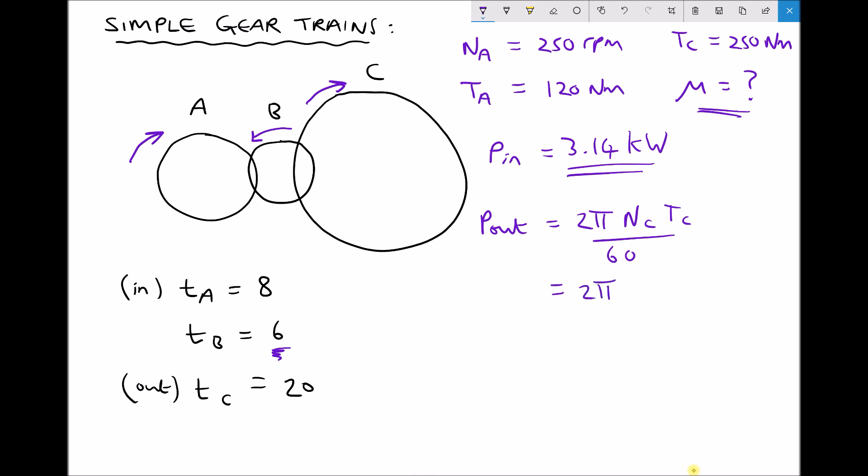2π times N_C we just calculated as 100, T_C was given as 250, all divided by 60, giving us an output power equal to 2618 watts or 2.62 kilowatts.